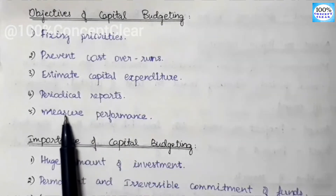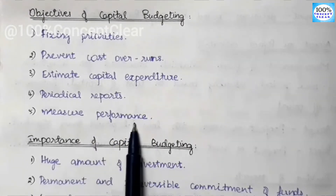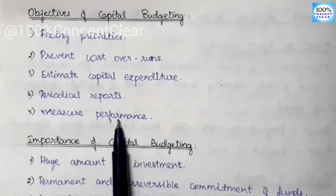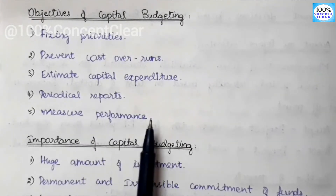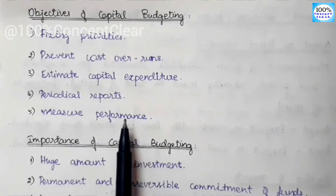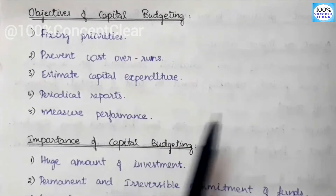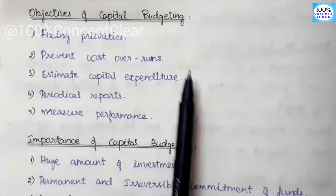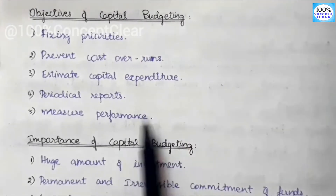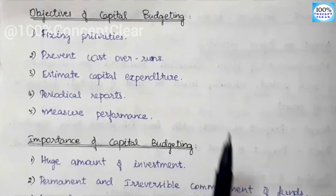The next objective is Measured Performance — how we are measuring the performance of the project and the capital budgeting process. This is an important objective of capital budgeting.